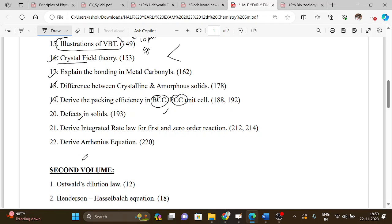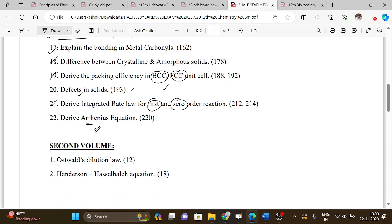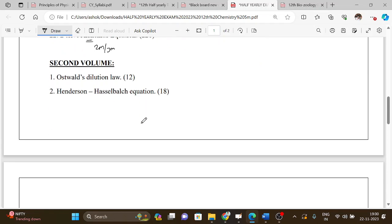Explain 2 marks or 3 marks, but sometimes Schottky defect, Frenkel defect 5 marks. Then derive Arrhenius equation, 2 marks, 3 marks. Write Arrhenius equation, but sometimes derivation chances. First volume, second volume.